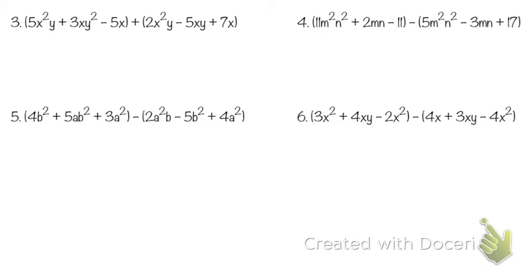Number 3: 5x squared y plus 3xy squared minus 5x plus 2x squared y minus 5xy plus 7x. So we have two different variables, x and y. What's going to come first? X's are going to come before y's, because x comes before y in the alphabet. But is there a higher power of x we see than just x to the first? Yes — 5x squared y. Is there another thing with that same power of x? Yes — 2x squared y. Those both come first, because we're focusing on x first, then looking for the highest power of x, which is x squared.